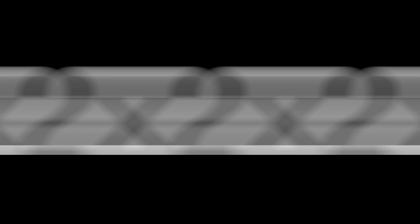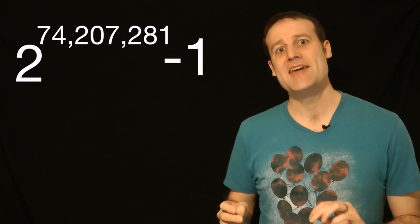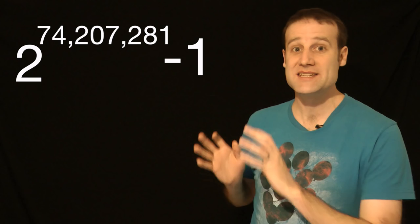These numbers which are 1 less than 2 to the power of something, in this case if you multiply 2 times 2 times 2, and you multiply 74,207,281 2s together, and then you subtract 1 off that result, you get this prime number.